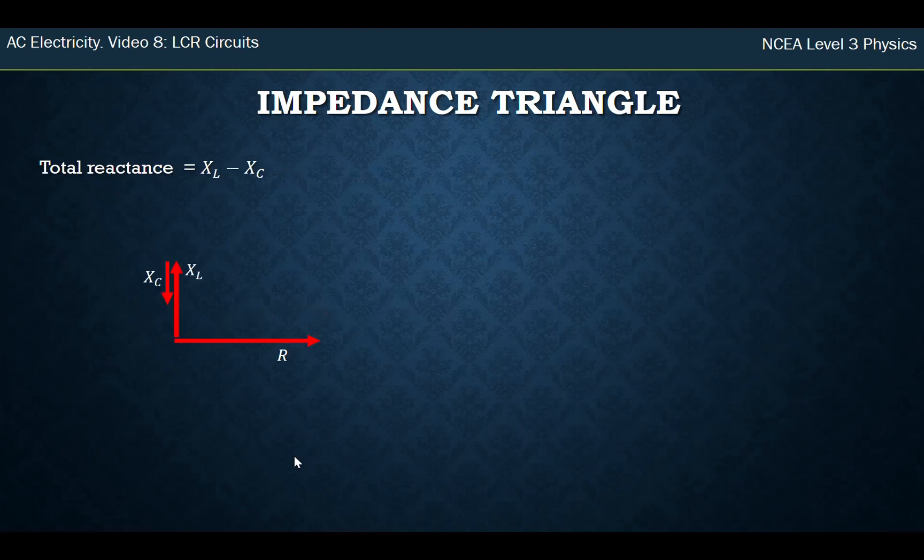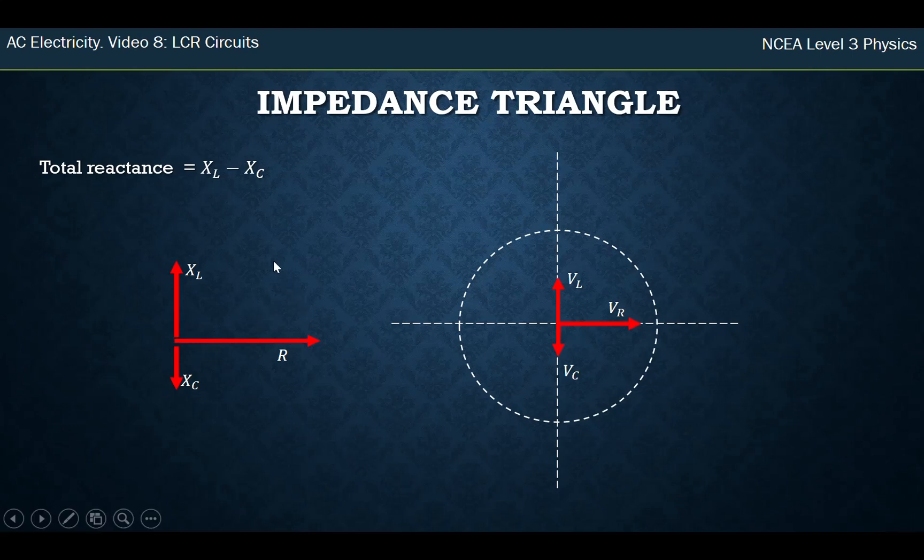Which if you go back to the original diagram, kind of makes sense. You've got L is bigger than, XL is bigger than XC. So overall you know that the overall impedance is going to be pointing up a bit, because this one dominates from the capacitor reactance.